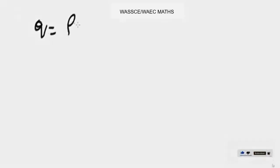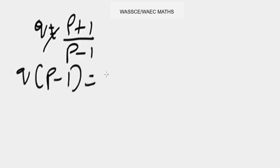q equals p plus one over p minus one. We are asked to make p the subject of the formula. Now to begin with, you can do cross multiplication or you can also use LCM, but cross multiplication will work faster here. Okay, so when you cross multiply, you're going to have q times p minus one equals p plus one.